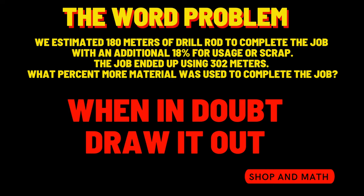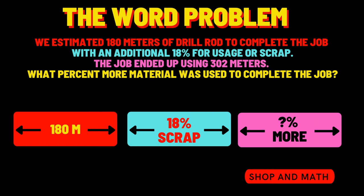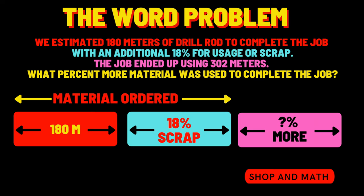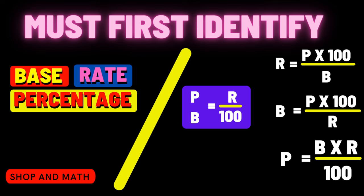Let's try something a little bit different — when in doubt, draw it out. Sometimes with word problems it's easier to draw them out so you can physically see the problem. We estimate 180 meters of drill rod in red, with an additional 18% for usage or scrap in blue. The job ended up using 302 meters — we'll call that pink. We're going to need two equations to solve this problem. First, let's identify our base, rate, and percentage for the material ordered.